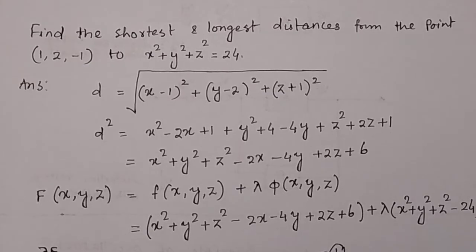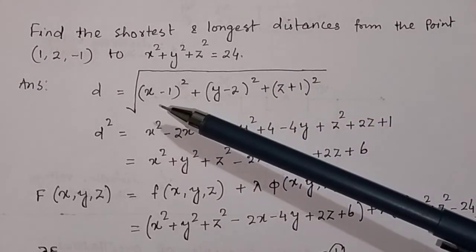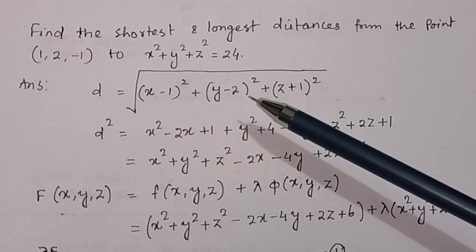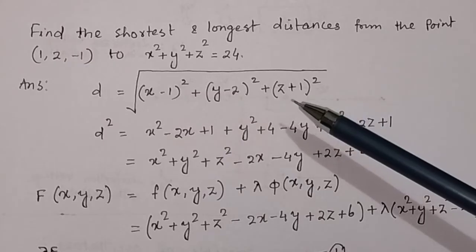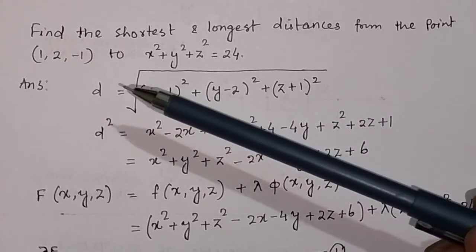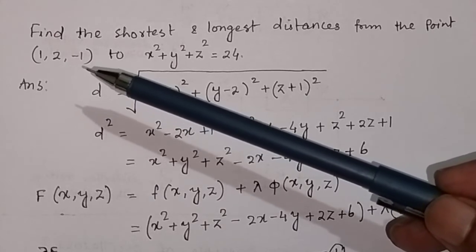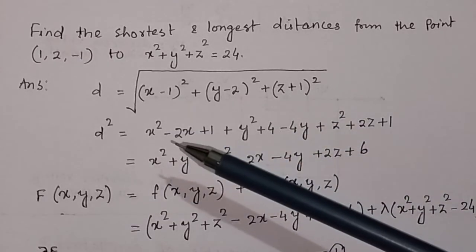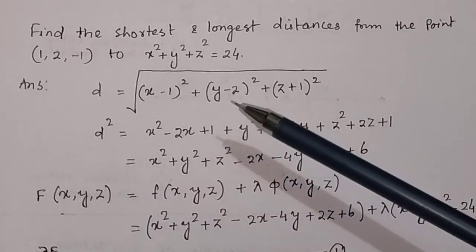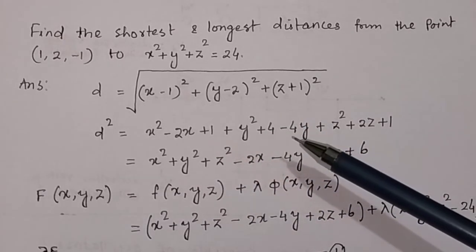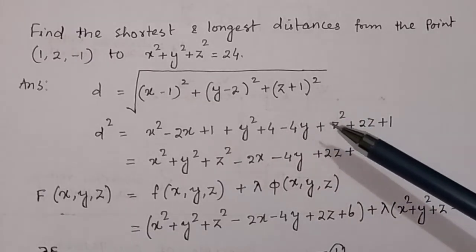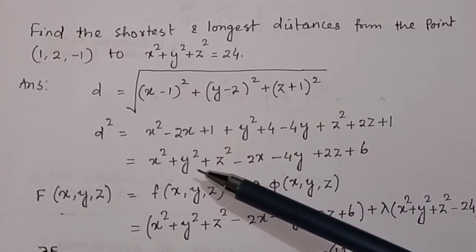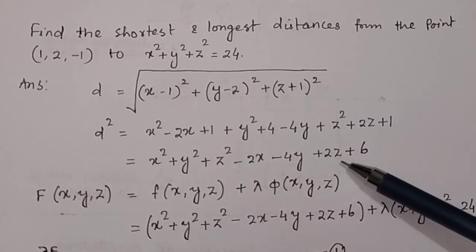We know from the distance formula: d² = (x₂-x₁)² + (y₂-y₁)² + (z₂-z₁)². With the given coordinate (1, 2, -1), d² expands to x² - 2x + 1 + y² + 4 - 4y + z² + 2z + 1, which simplifies to x² + y² + z² - 2x - 4y + 2z + 6.